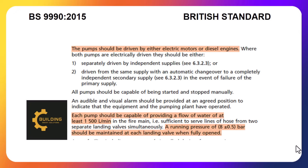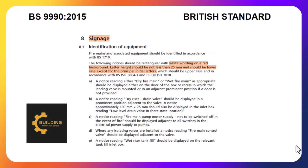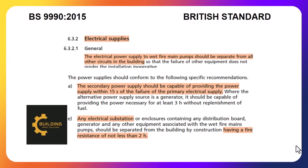The defined system pressure should be maintained at 8 bar when the landing valve is fully opened. The electric supply for fire main pumps must be entirely separate from all other circuits in the building. A secondary power supply must be available for the fire pump, capable of providing power within 15 seconds of failure of the primary supply. The electric substation must have a fire resistance of at least 2 hours.